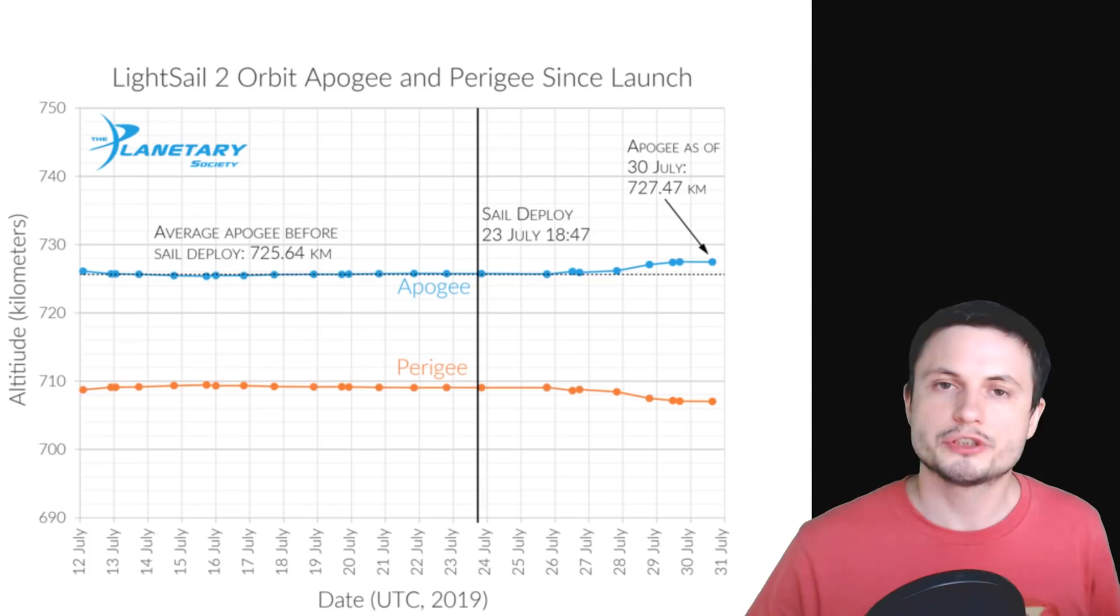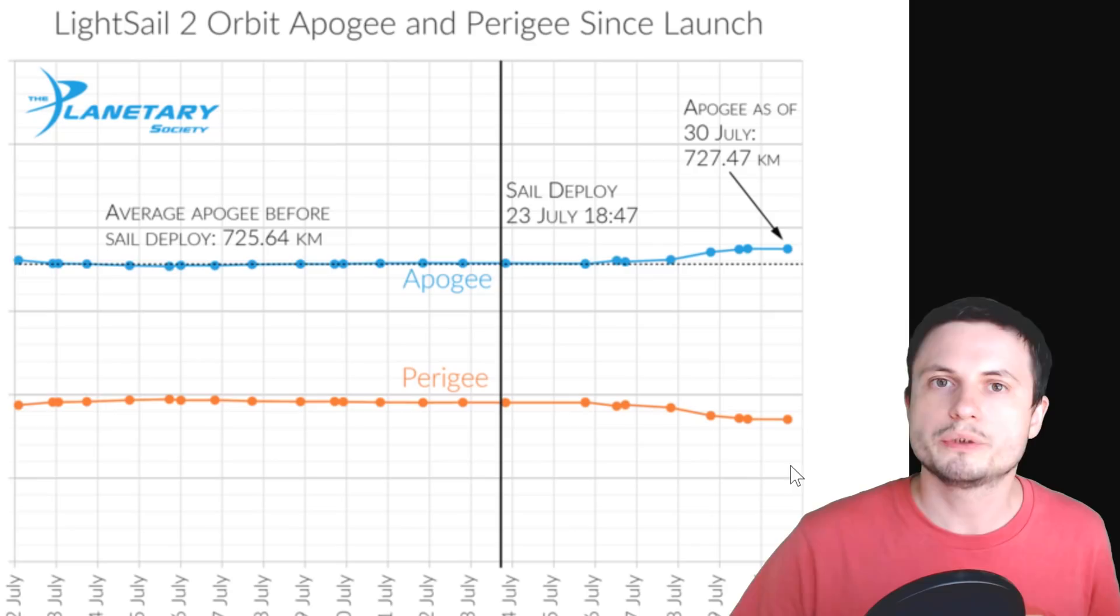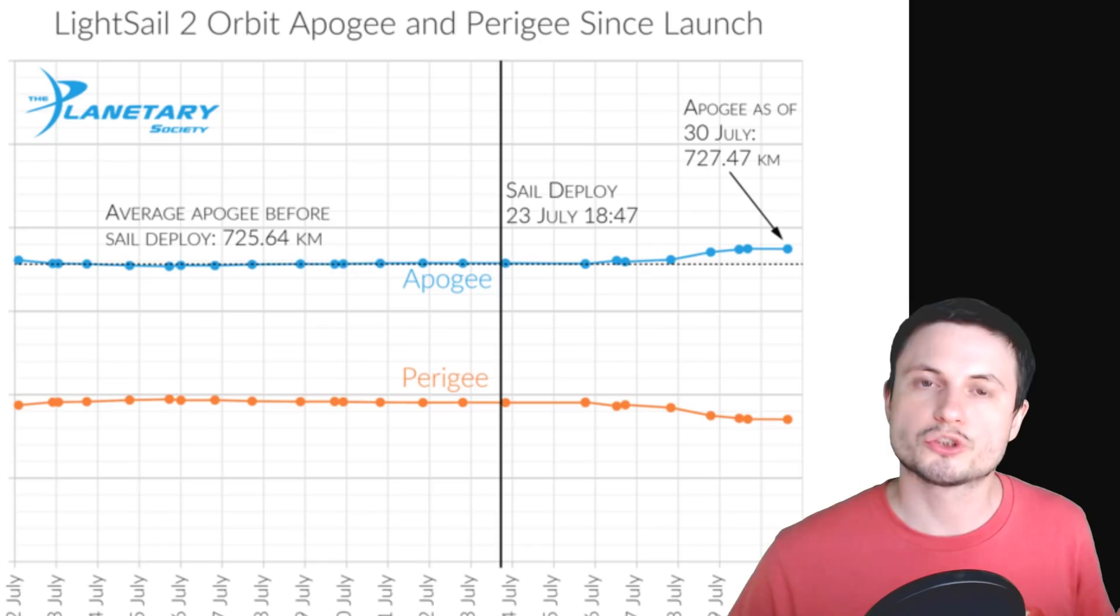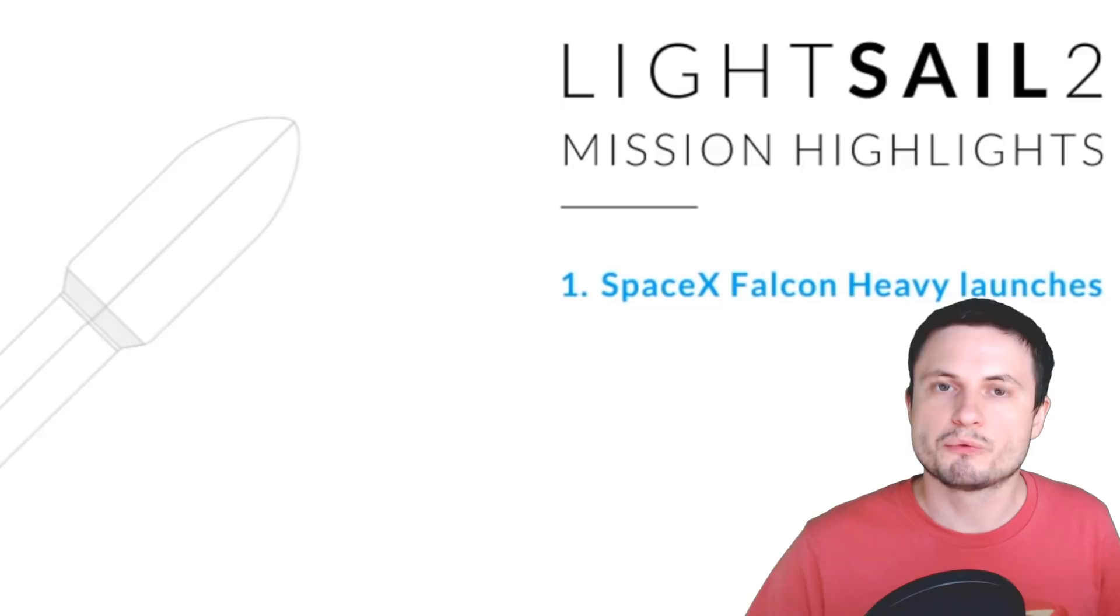But for now, according to the scientists, two thirds of the time we are able to control it really well. But one third of the time, it's still sort of tumbling around and is not really controllable. And eventually the orbit here will drop so low that the atmospheric pressure will start influencing the sail to the point where it's just going to decrease its orbit and reenter Earth's atmosphere.